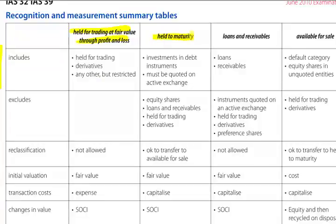Held to maturity covers investments in debt instruments, but they must be quoted on an active exchange. Loans and receivables includes, obviously, loans and receivables, which also includes accounts receivable or debtors. These need to be revalued at fair value on initial valuation, and changes in value will go through a statement of comprehensive income, but there's not likely to be much change in the accounts receivable nor in the loans. An available for sale financial asset is the default category, where things which don't fall into held for trading, held to maturity, or loans and receivables would be included instead in available for sale.